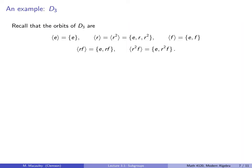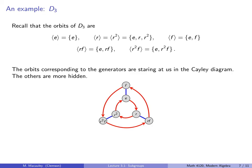So let's continue with our example of D3. Now recall that there are five orbits of D3, which are these five sets right here. Remember, of the six elements, R and R squared generate the same orbits. Now here's the Cayley diagram, and notice that the orbits corresponding to the generators are staring at us in the face. So the orbit corresponding to R is this subgroup right here. The orbit corresponding to F is this subgroup right here. And the other orbits are more hidden.